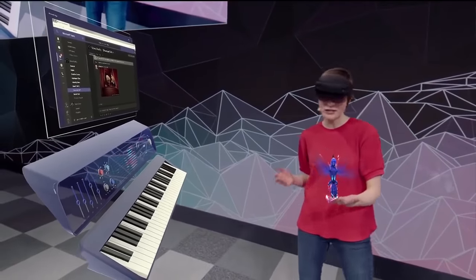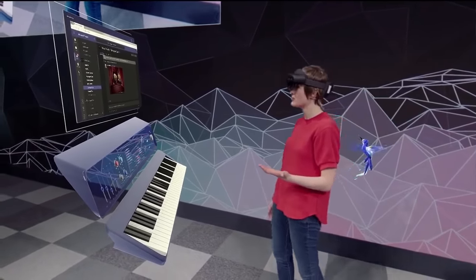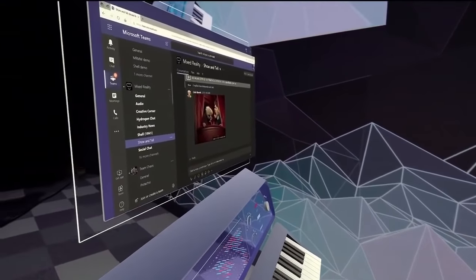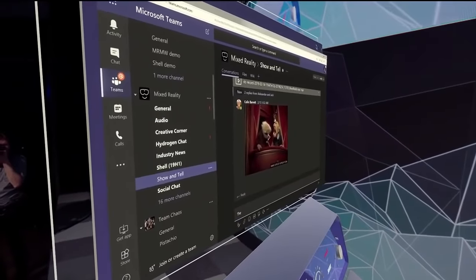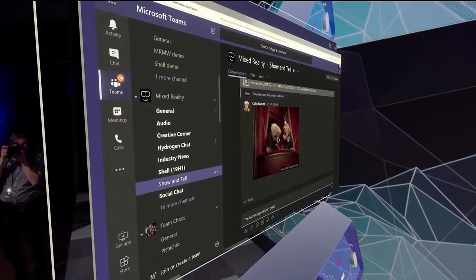That's right. HoloLens 2 has eye tracking. So I can just look over to this browser here and look at the bottom of the screen to scroll it, and then send my message. Start dictation. The hummingbird looks great! Exclamation mark. Send.